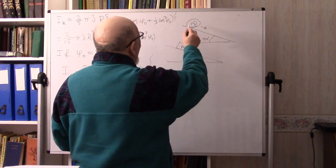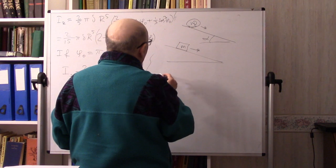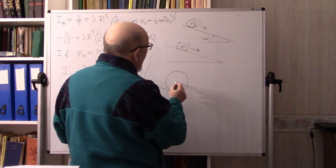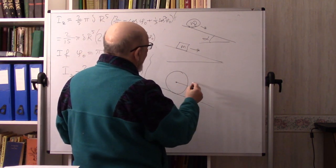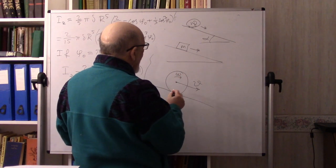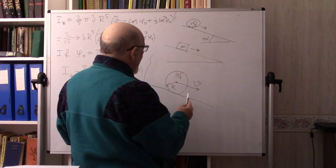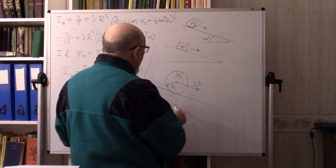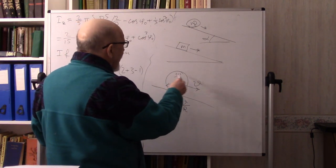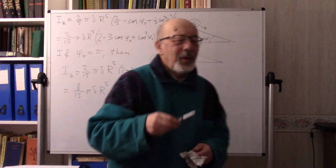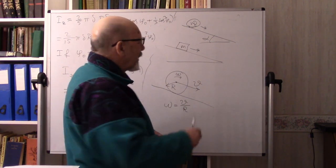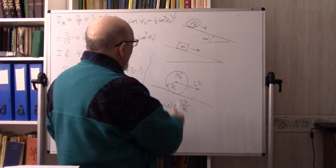When the ball moves down it has velocity v and rolls with angular velocity ω. If its radius is R then ω = v/R. The kinetic energy of the rolling ball is the sum of two components: translational energy and rotational energy.